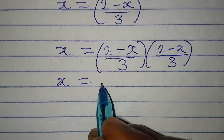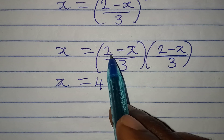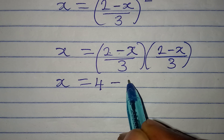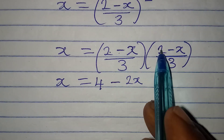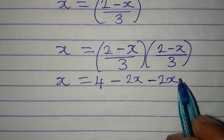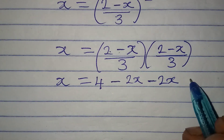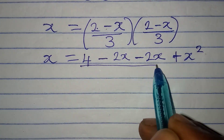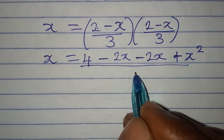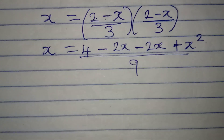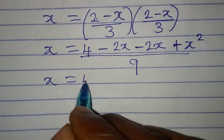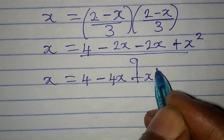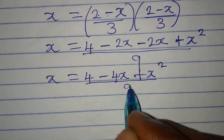Expanding: 2 times 2 gives 4, 2 times negative x gives minus 2x, negative x times 2 gives another minus 2x, and negative x times negative x gives plus x squared. So we have x = (4 - 4x + x²) / 9.